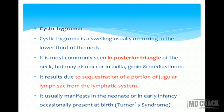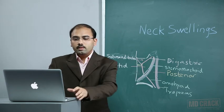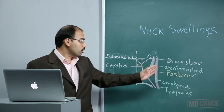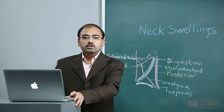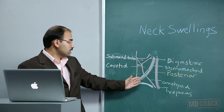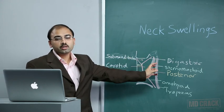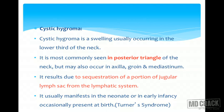Cystic hygroma is a swelling usually occurring in the lower third of the neck, most commonly seen in the posterior triangle. It may also occur in the axilla, groin, and mediastinum. The etiology is sequestration of a portion of the jugular lymph sac from the lymphatic system. It usually manifests in neonates or early infancy, or may occasionally present at birth.